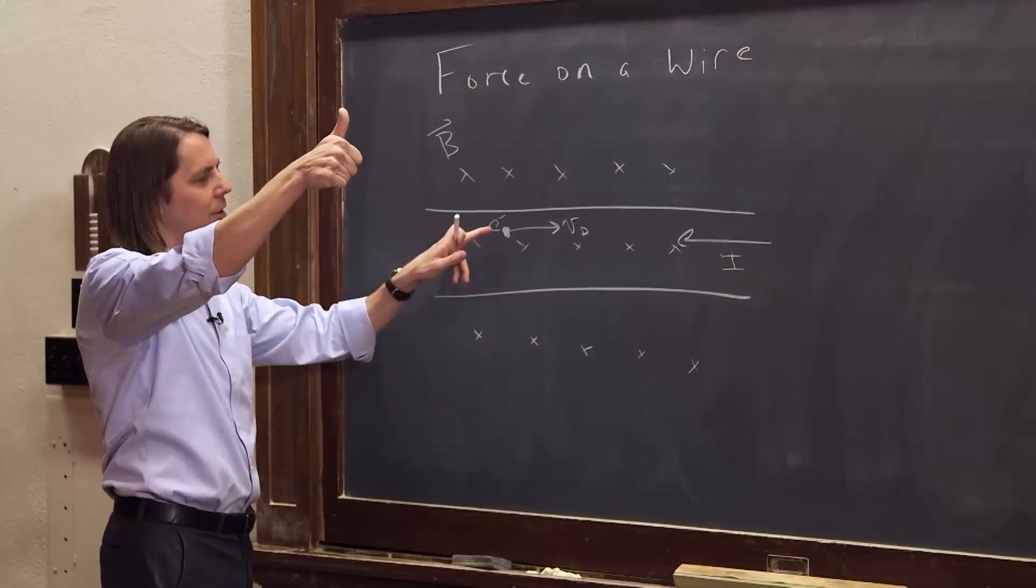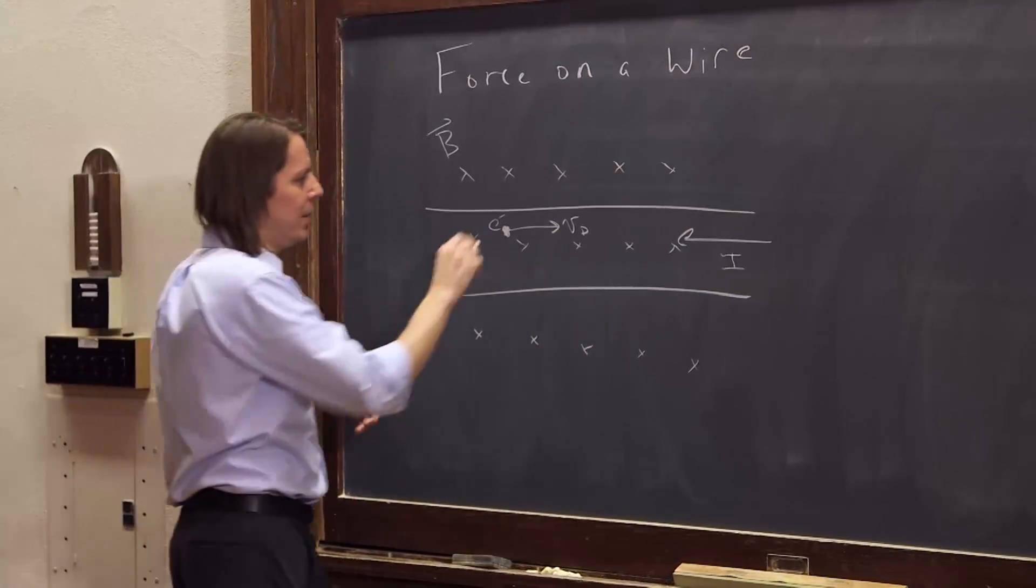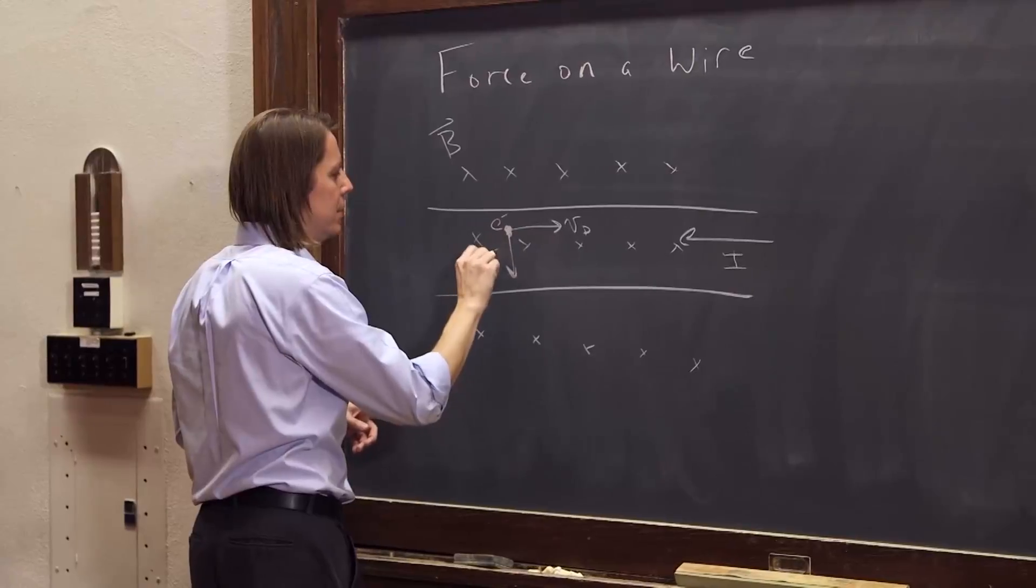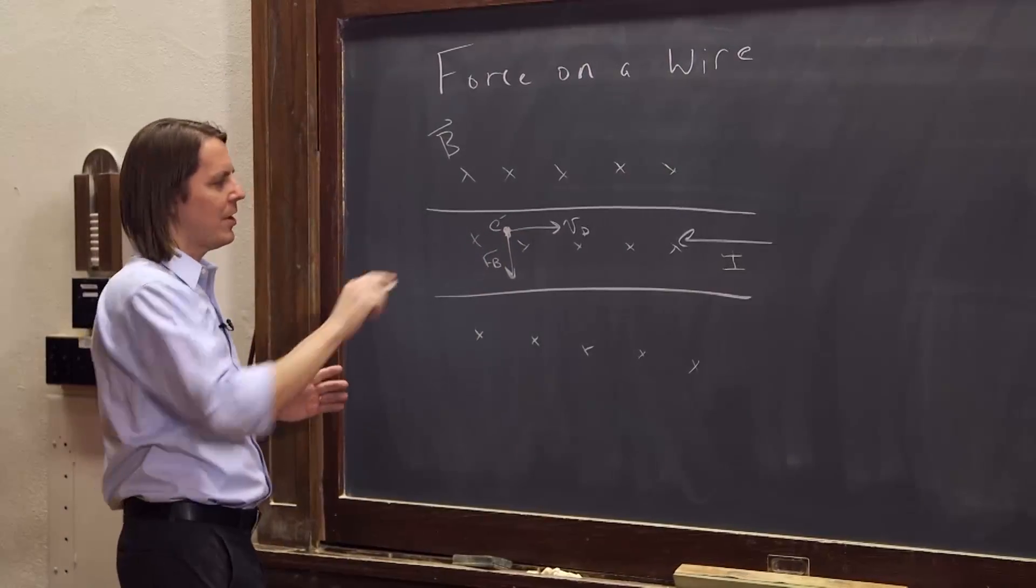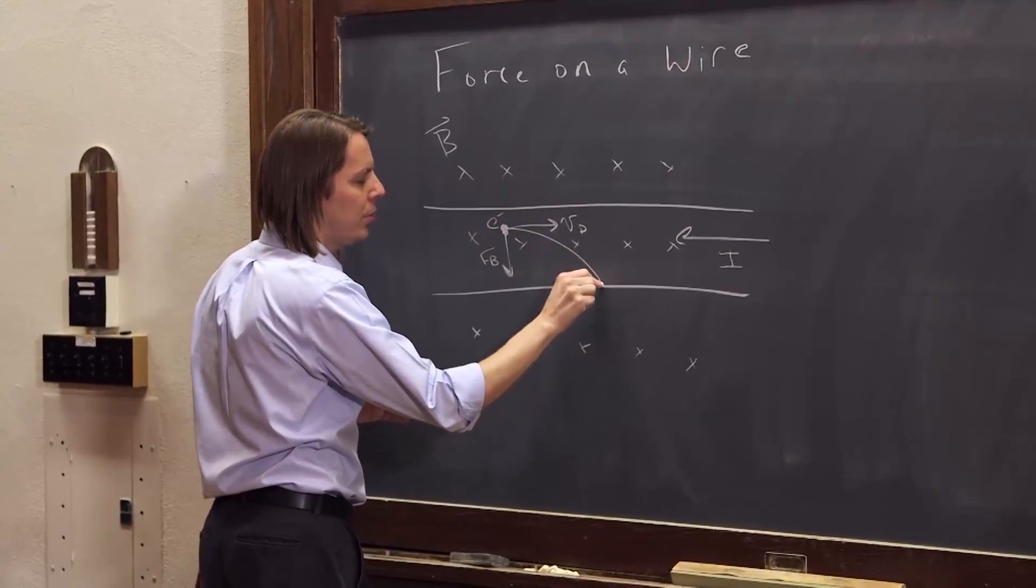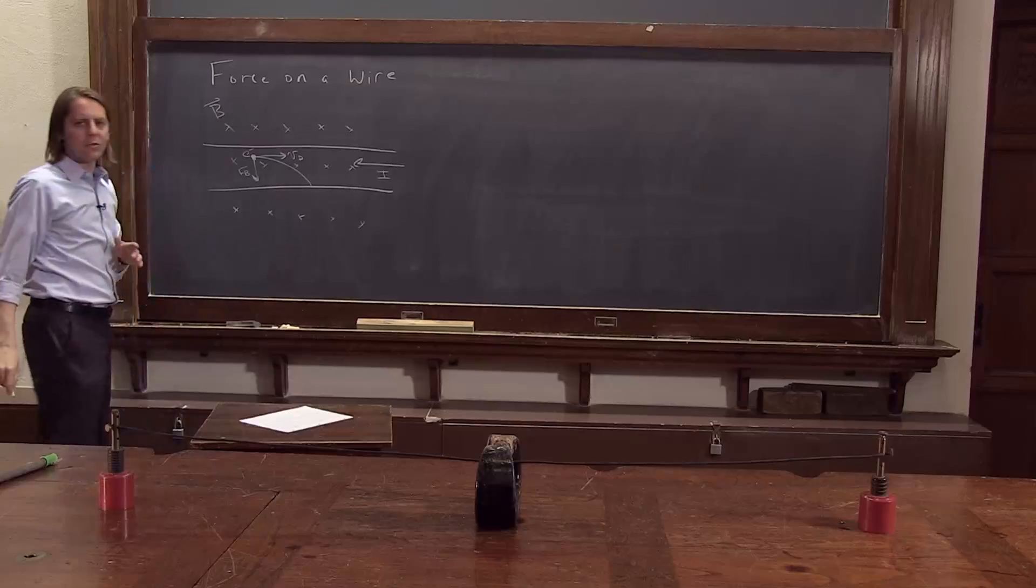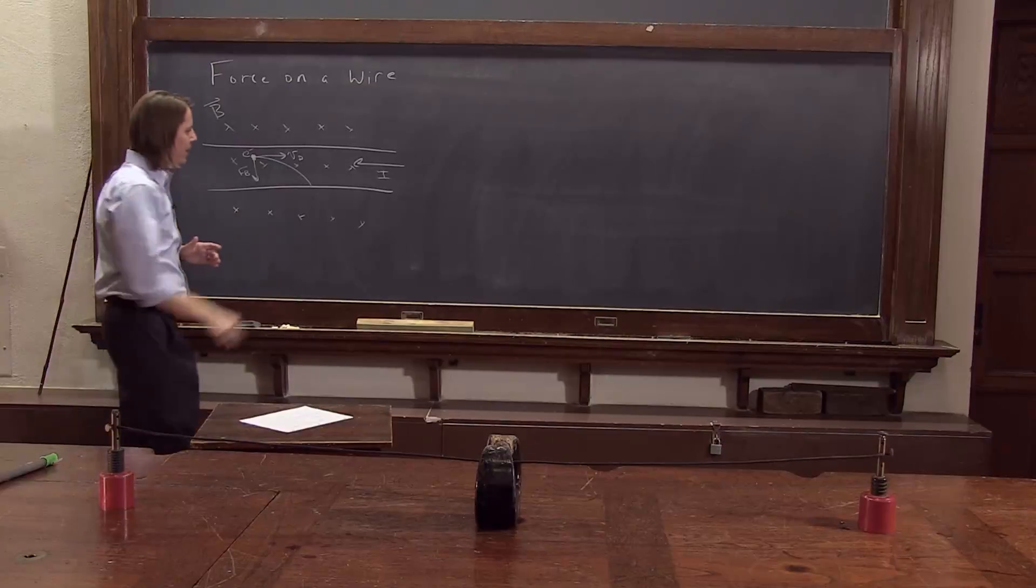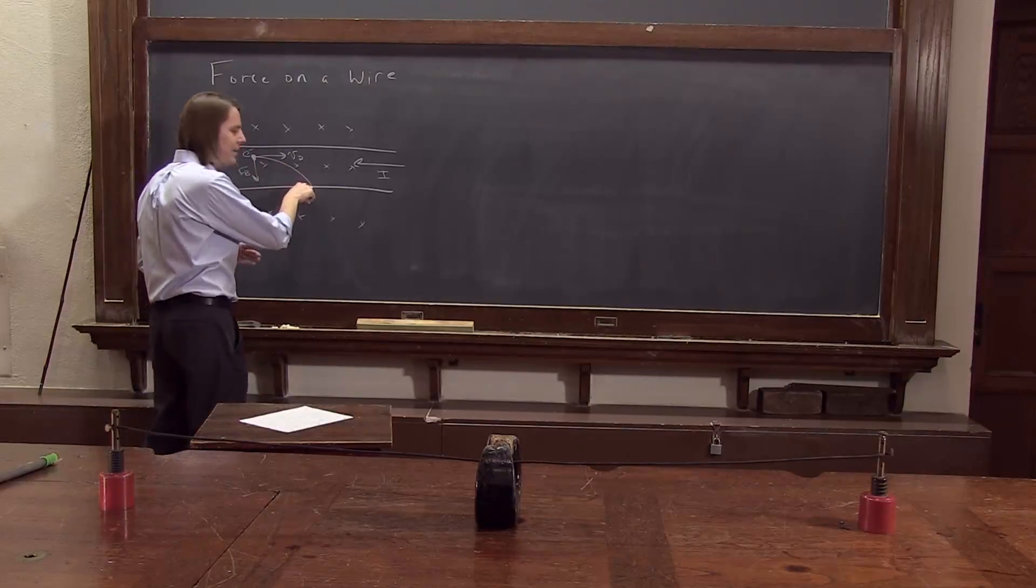It's negative, so the force is down. So it's going to pull it down like that. And as we've been talking about, it's always going to be perpendicular to the motion. The electron is going to go through a curved route, through a circular path. And what's it going to do? It's going to hit the edge of the wire.